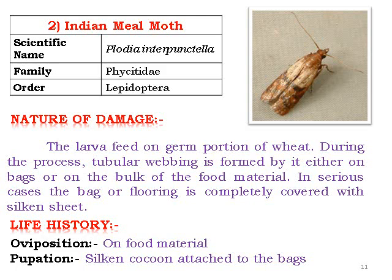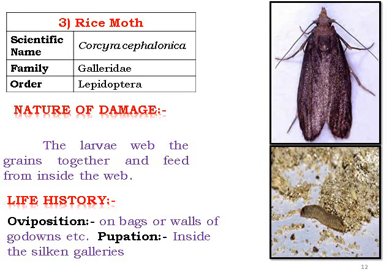The rice moth, Corcyra cephalonica, is a major pest of rice and feed. Mostly all types of grains are consumed by the adult. Pupation occurs inside silken galleries on bags or walls of godowns. This is a very particular insect which can be used for production of Trichogramma parasitoids. The Japanese Trichogramma species is used to parasitize the eggs, and it is used as a factitious host — meaning its rearing and multiplication are very easy in the laboratory.